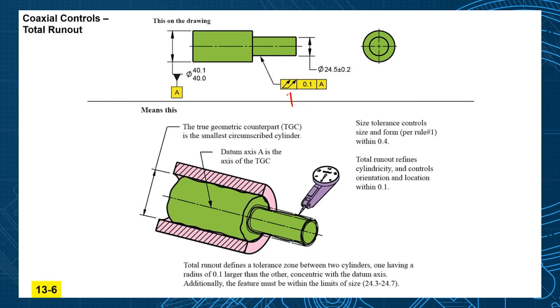Now total runout is your 3D specification. Look how the tolerance zone is two concentric cylinders extending the full length of the feature. That's going to control your three-dimensional form, your cylindricity, your taper, and your straightness on the surface as well.